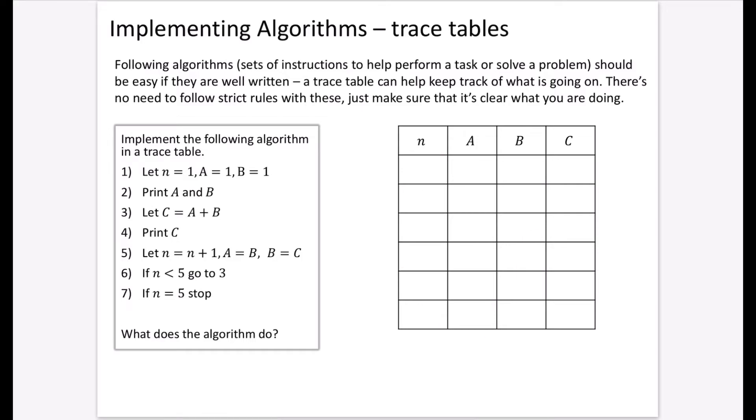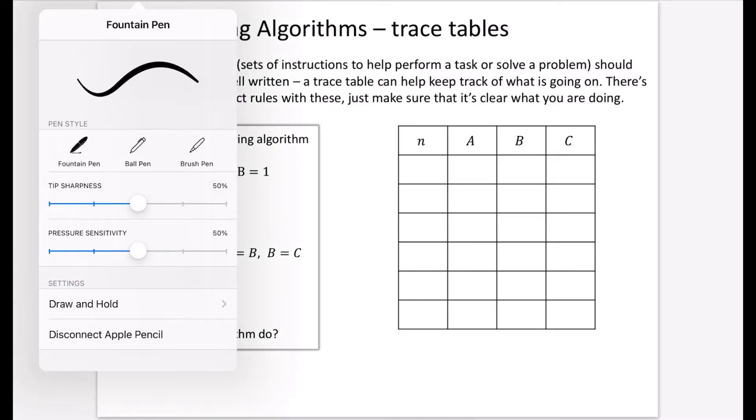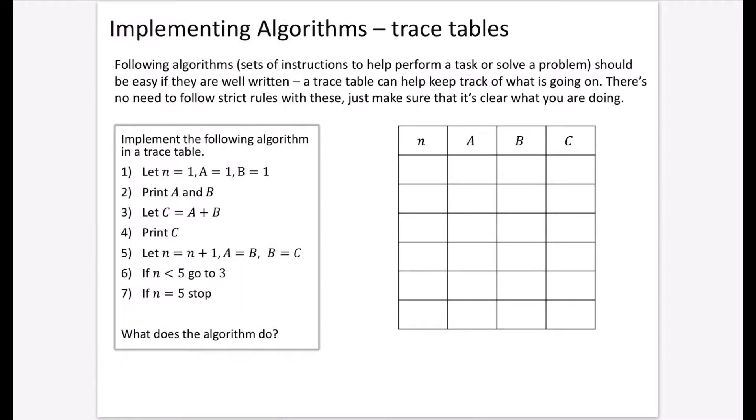For this first example, we'll implement this algorithm in a trace table. In the exam, they should give you the trace table to begin with. First, it says let n equal 1, a equal 1, and b equal 1. So let's put 1 in all of these places. Print a and b—that means write it out at the bottom, so 1 and 1. Let c equal a plus b, so c equals 2. Then it says print c.